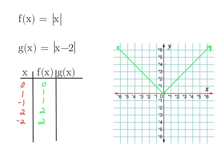But what if we subtract 2 inside of the function? What that means is that we're going to have to subtract 2 before we take the absolute value. So when x is 0 — 0, 0 on the parent function is the vertex. But when x is 0, we have to subtract 2 first, which will put us at negative 2. Then we take the absolute value to get 2. So now when the x-coordinate is 0, the y-coordinate is 2. What was 1, 1 before? The absolute value of 1 is 1.